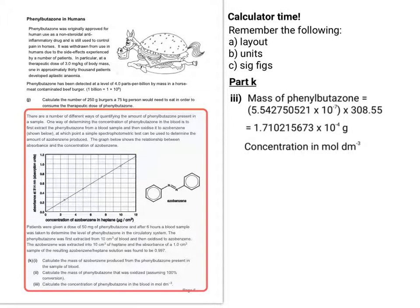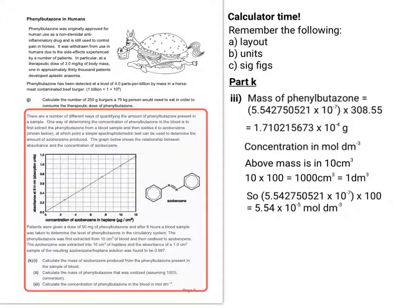So the next thing to do is to work out the concentration in moles per decimetre cubed. So the above mass is in 10 centimetres cubed, so scaling up by 100, you get the mass in 1 decimetre cubed. So if we take the number of moles as 5.542750521 times 10 to the minus 7 and times it by 100, that gives us 5.54 times 10 to the minus 5 moles per decimetre cubed. So let's now move on to the final few questions from this section.